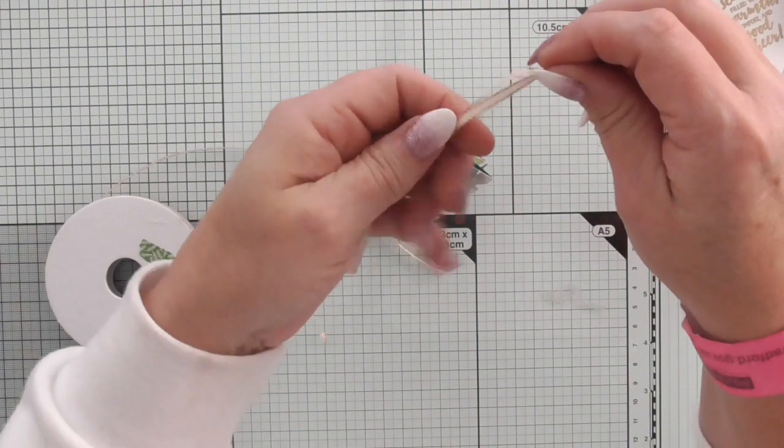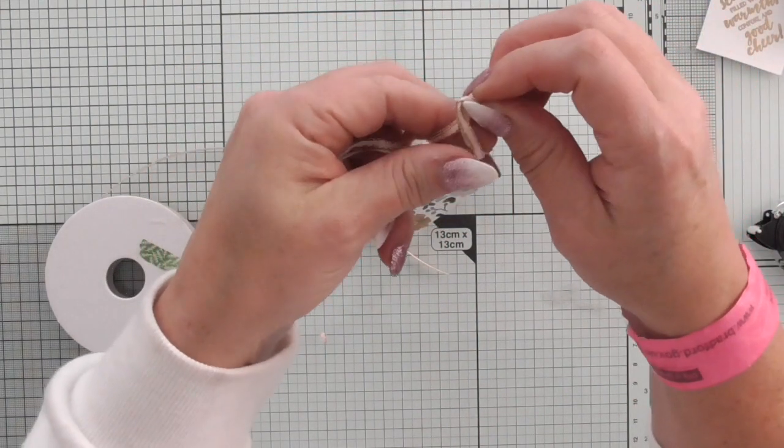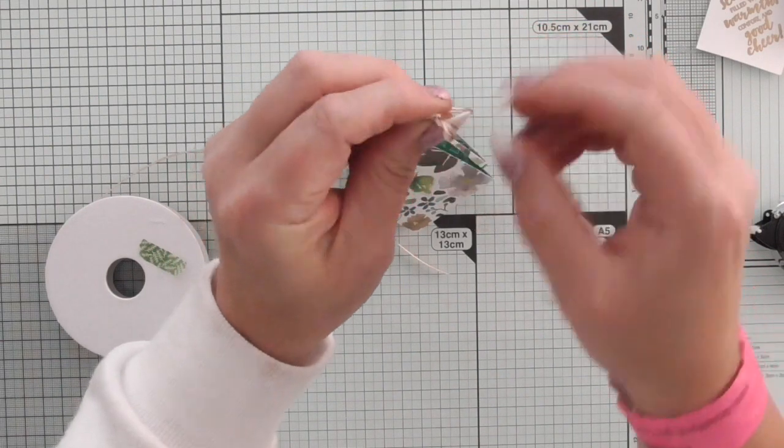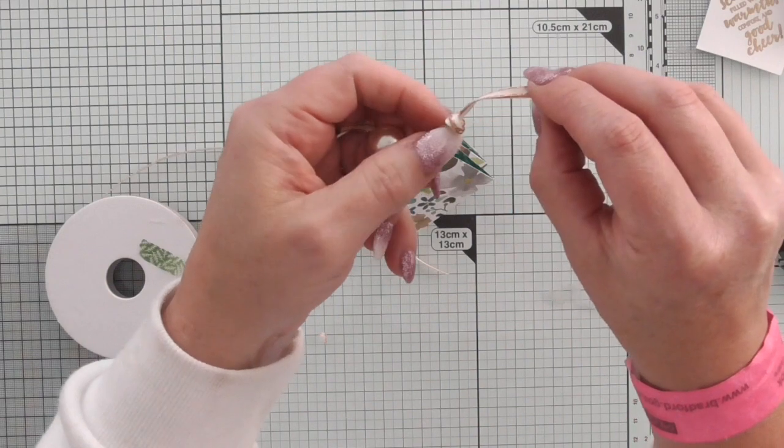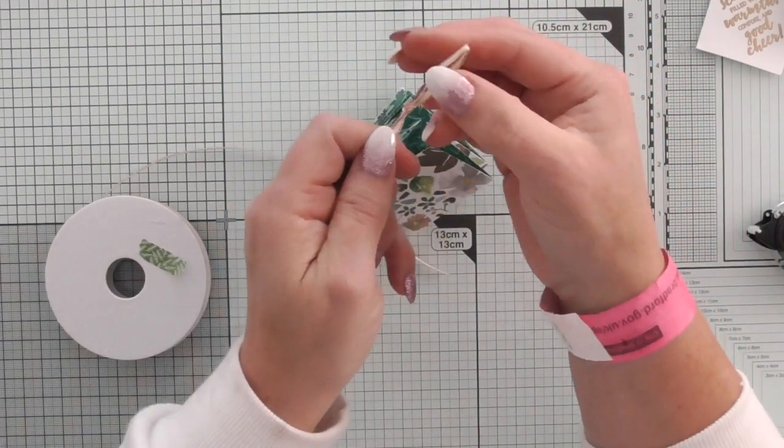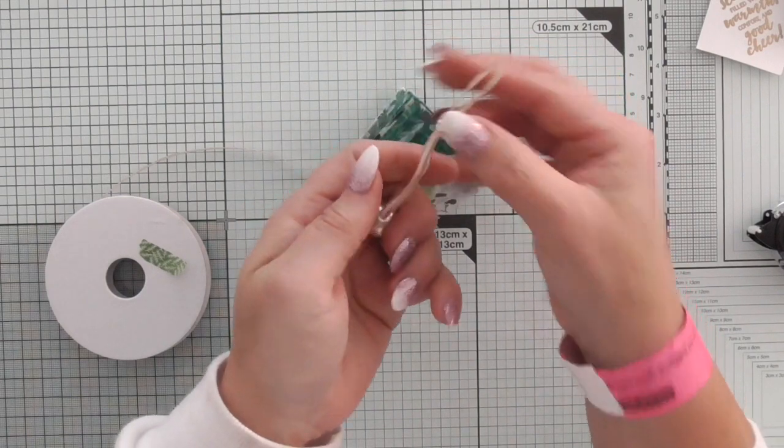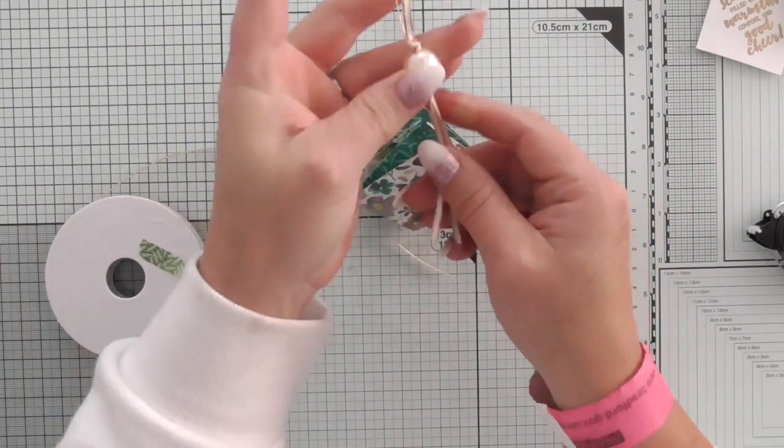And then just at the top here, making sure that the bead doesn't come back off at the bottom, I'm going to tie a knot. So that we've got a hanging loop if somebody wants to use it as a decoration. So we've got a hanging loop there but we've also got a knot to stop this bead coming off.